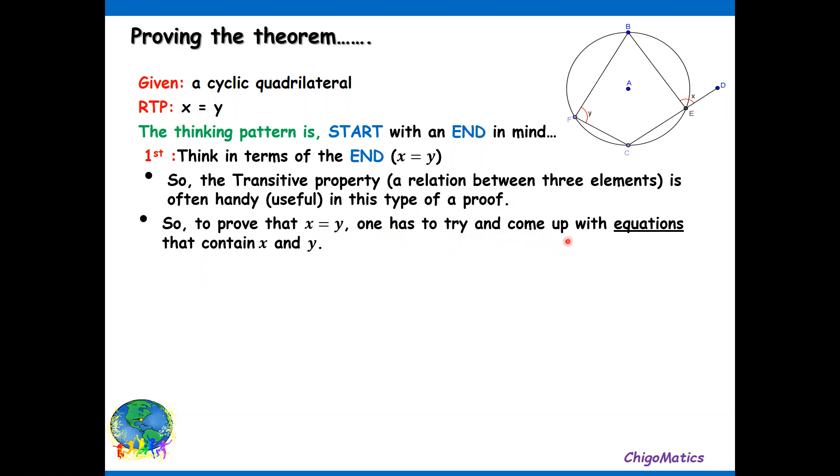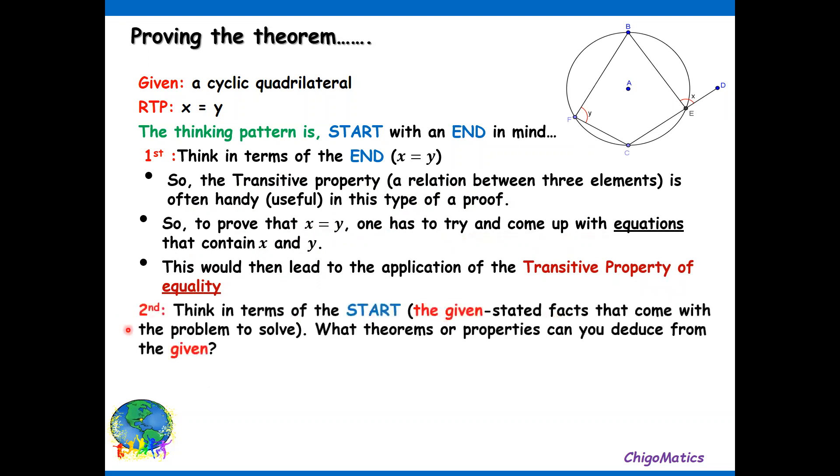So to prove that x equals y, one has to try and come up with equations that contain x and y. This would then lead to the application of the transitive property of equality. Second, think in terms of the start: the given state of facts that come with the problem to solve. What theorems or properties can you deduce from the given?